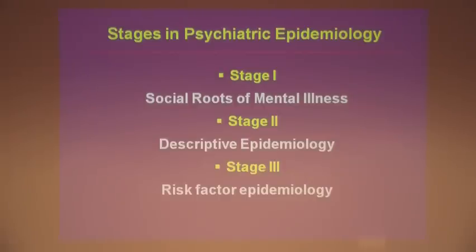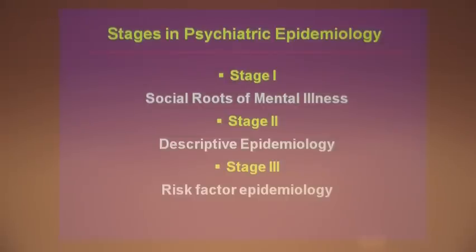We're now moving into the era of risk factor epidemiology. I'd recommend a new textbook by Ezra Susser and colleagues that is a rich compilation of the history and methods of epidemiology in general, and psychiatric epidemiology in particular. The third phase, according to Susser's nomenclature, is called eco-epidemiology, where we're going to be building sets of risk factors and correlates across developmental life stages — looking across the lifespan, moving as early as birth, all the way to the other end.